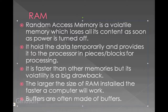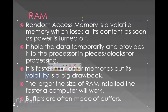This is the purpose of RAM. Since the CPU cannot directly access files on the hard drive, files from the hard drive are first fed to the RAM, and from RAM block by block or piece by piece that data is sent to the processor for processing. RAM is faster than other memories, but its volatility is a big drawback since it cannot hold data for a very long time.